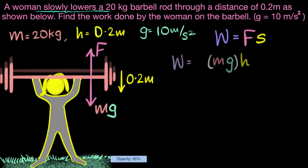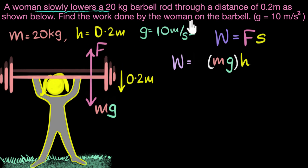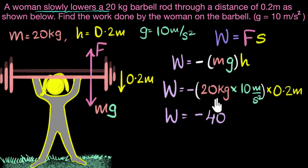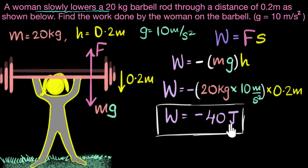So work done equals mg times h. But is it positive or negative? Her push is upwards while the displacement is downwards — opposite directions — so the work done is negative. Substituting: 10 times 0.2 is 2, and 2 times 20 is 40. So the answer is negative 40 joules. The work done by the woman on the barbell is negative 40 joules. The key takeaway is that when lowering or raising an object, the force you apply is equal and opposite to the gravitational force on that object.